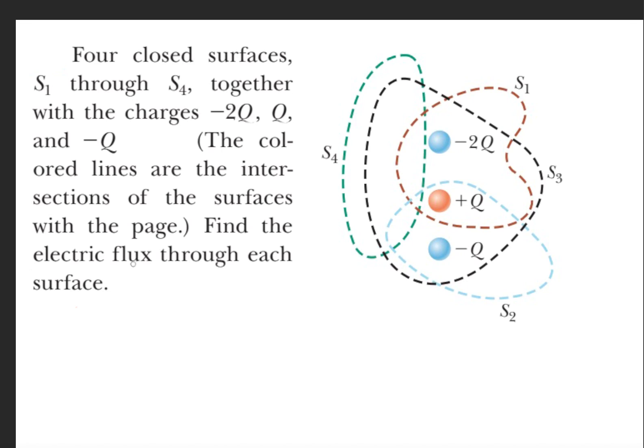To find the electric flux through each surface, we're going to use this electric flux formula, which is the charge of the enclosed charge divided by epsilon naught.